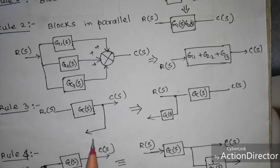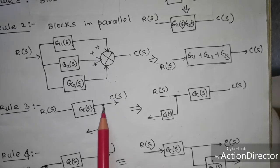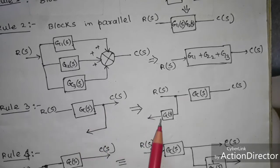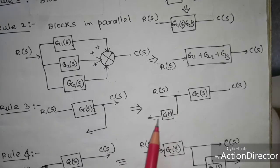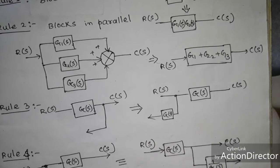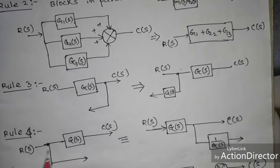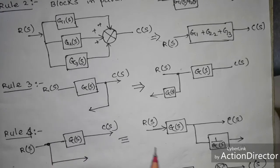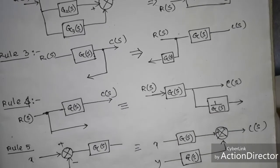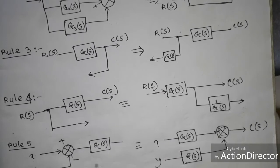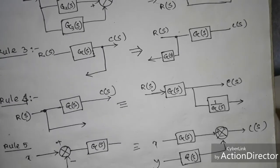Rule 3 is moving a takeoff point ahead of a block. If the takeoff point is after the G(s) block and we want to move it before, then we add G(s) in the feedback path. Rule 4: when the takeoff point is before G(s) and we want to move the takeoff point after G(s), then we add 1/G(s) in the feedback path. Rule 5 involves moving the summing point beyond a block, but this is not so important.